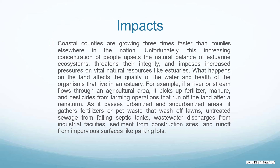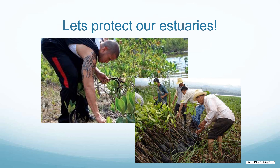What happens on the land affects the quality of the water and health of the organisms that live in an estuary. For example, if a river or stream flows through an agricultural area, it picks up fertilizer, manure and pesticides from farming operations that run off the land after a rainstorm. As it passes urbanized and sub-urbanized areas, it gathers fertilizers, pet waste that washes off lawns, untreated sewage from failing septic tanks, wastewater discharges from industrial facilities, and sediment from construction sites and runoff from impervious surfaces like parking lots.